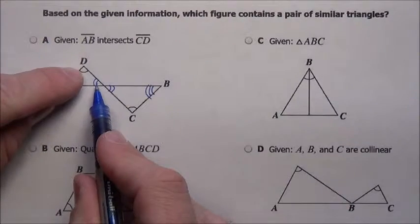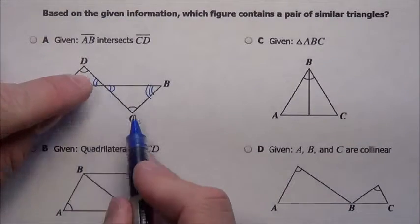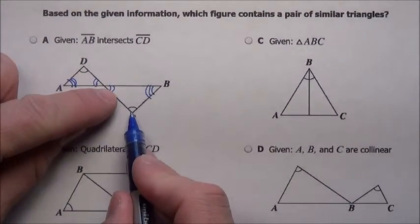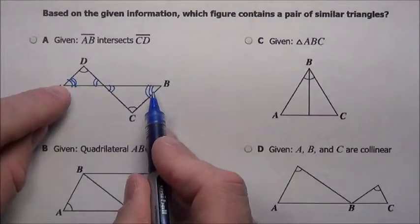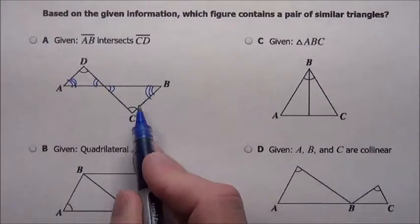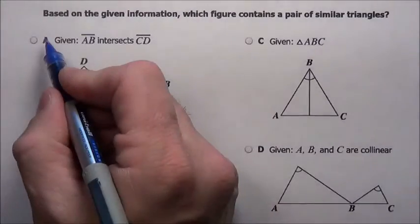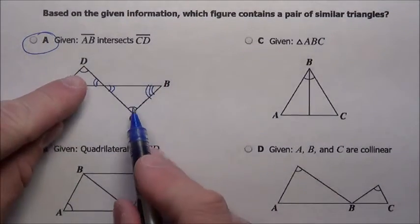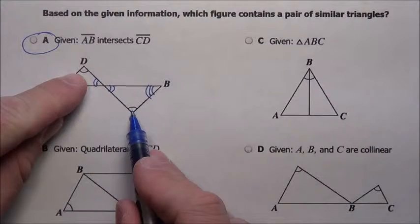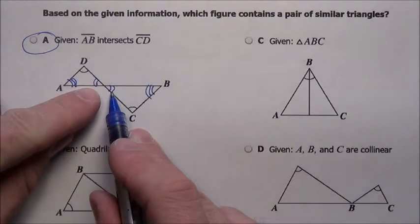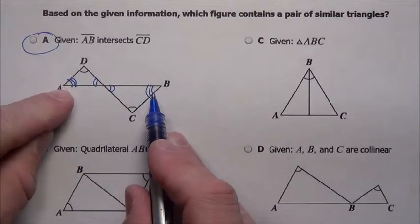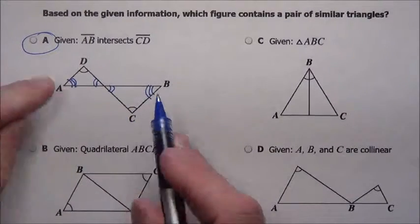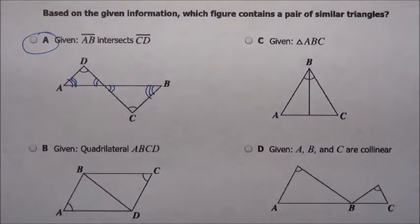That's going to force — since they all add up to 180 — that's going to make this third angle have to match that angle. Because if these two add up to, say, 100, and these two then have to add up to 100, both those would have to be 80s. So Choice A definitely works. Once it gave me that these angles match and I knew those were verticals, it forced the third to match.